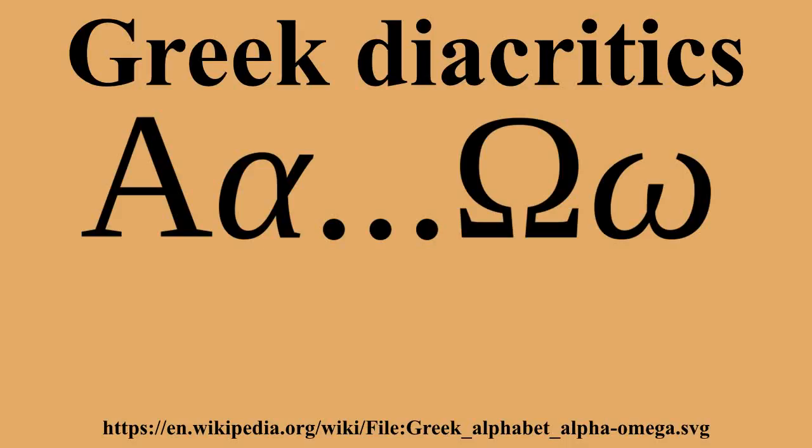The uncial or majuscule system, where text is written entirely in capital letters, was used until the 8th century, when the minuscule polytonic system supplanted it.